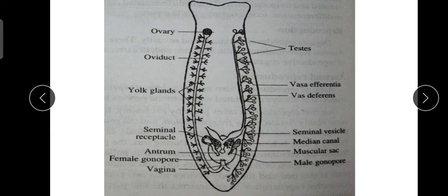Also opening to the genital atrium are two saccular female structures: the seminal receptacle and the muscular sac. The seminal receptacle receives the cirrus and sperms of the partner during copulation. This is the complete male and female system.